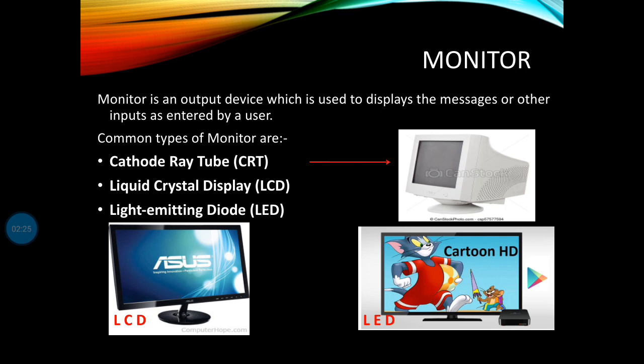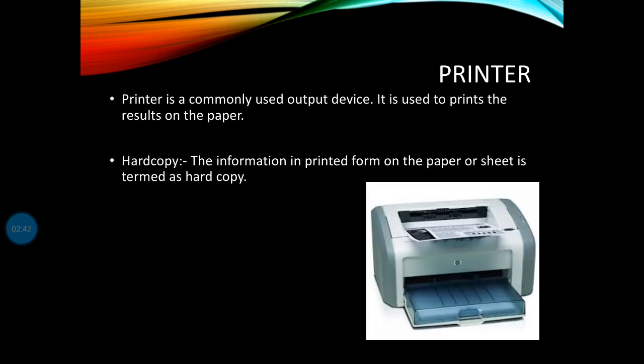The third type is the Light Emitting Diode (LED) monitor. The second output device is the printer. Printer is a commonly used output device. Printer क्या करता है — what does a printer do?